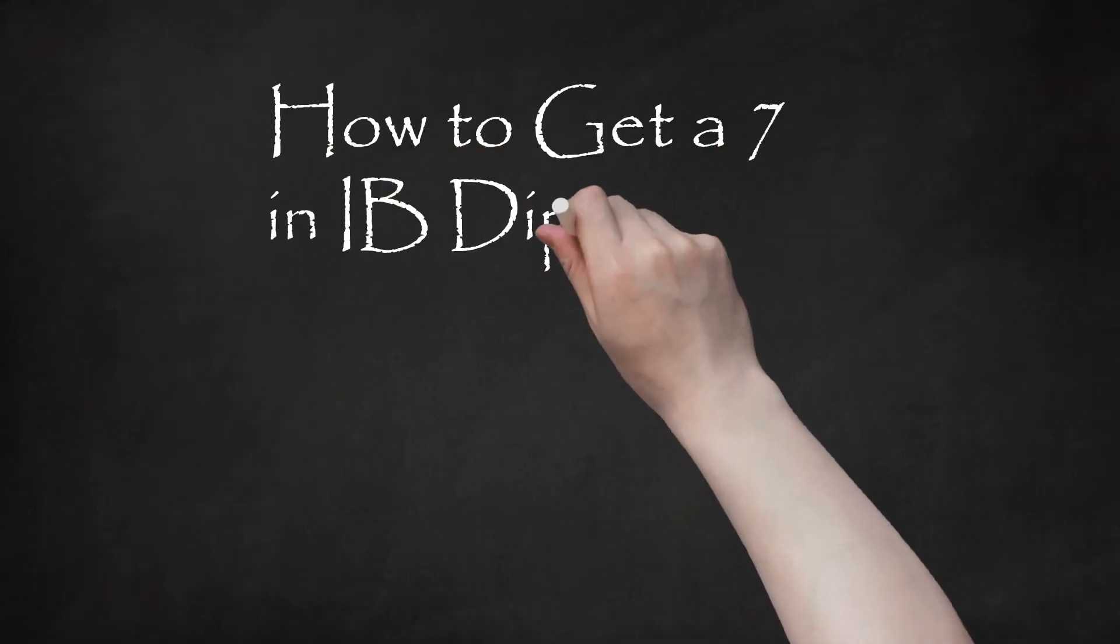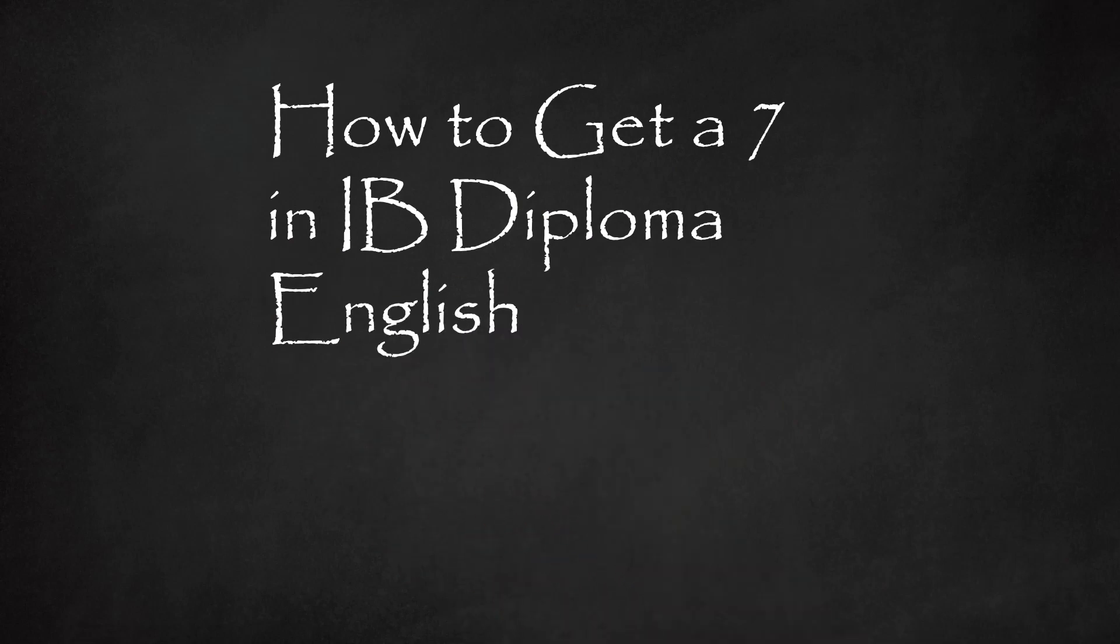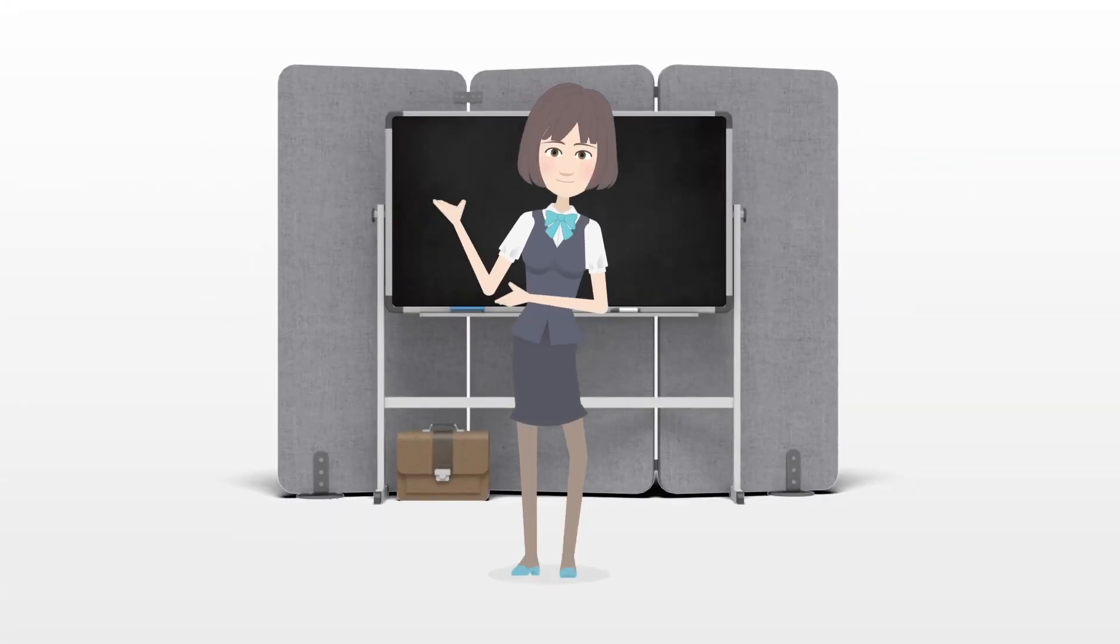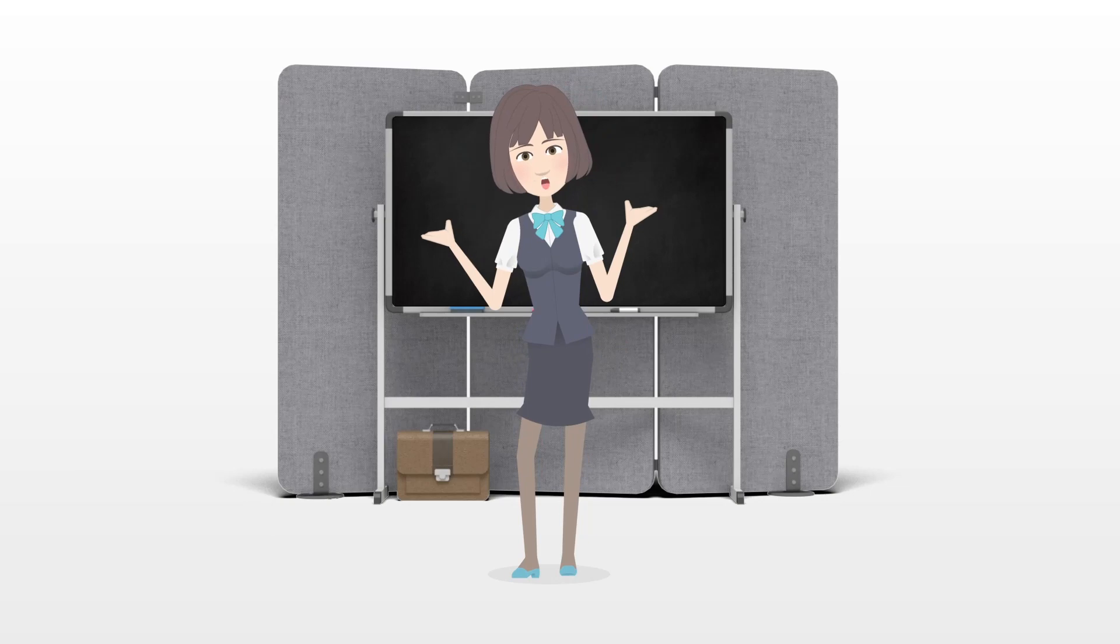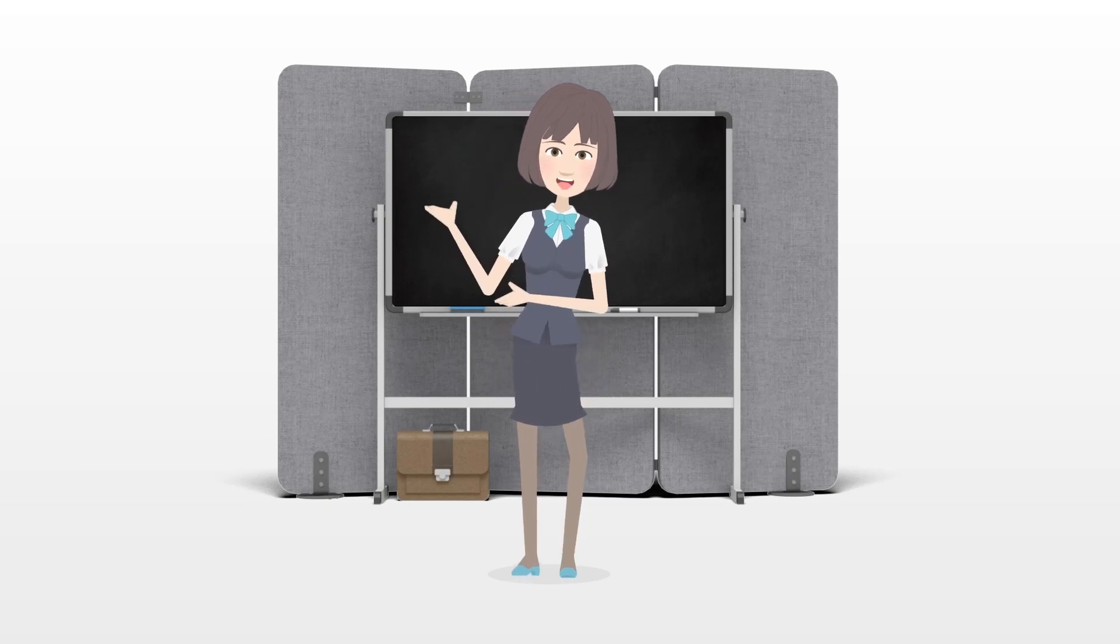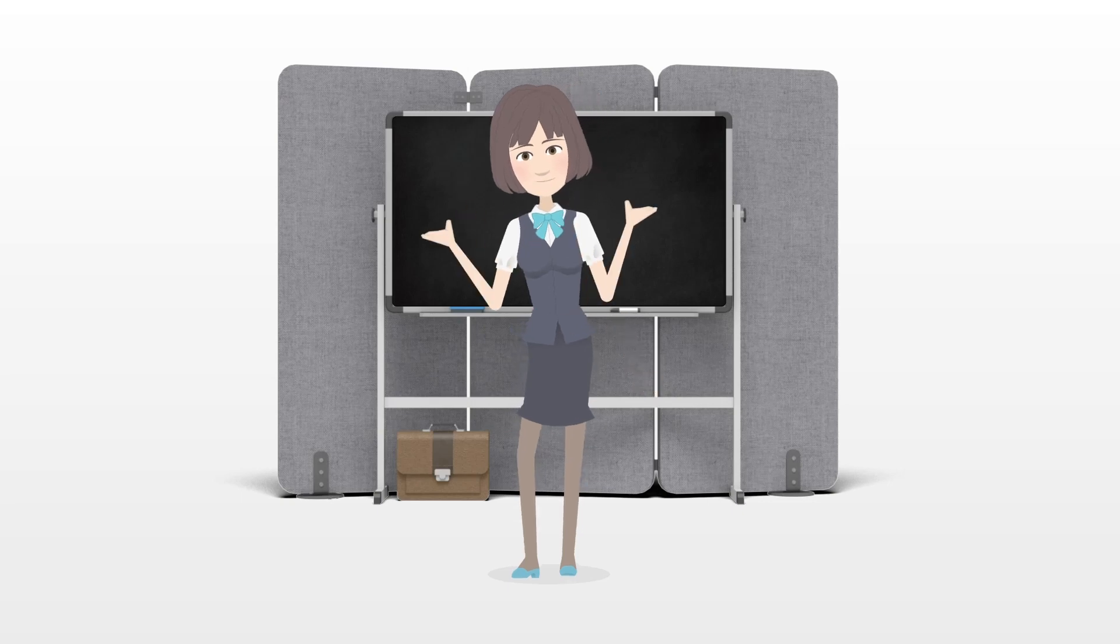How to get a 7 in IB Diploma English. If you're planning to take the International Baccalaureate Diploma Program coursework in Literature in English, i.e., English A1, your goal is probably to beef up your profile for college applications. As such, you may be aiming for the max score in the course, a 7, on a scale of 1 to 7.